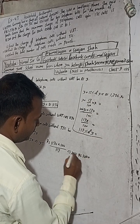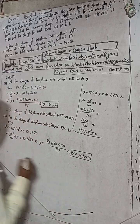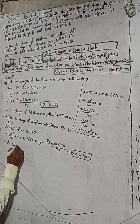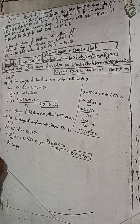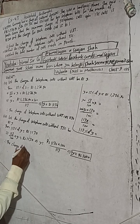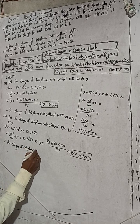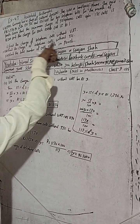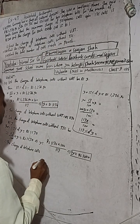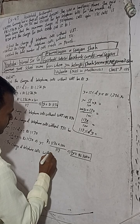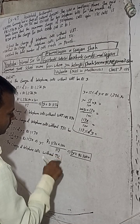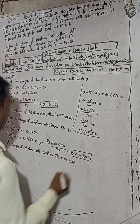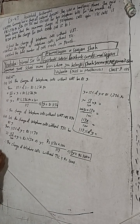This equals Rs 1,000. Therefore, the charge of telephone calls without TSC is equal to Rs 1,000.